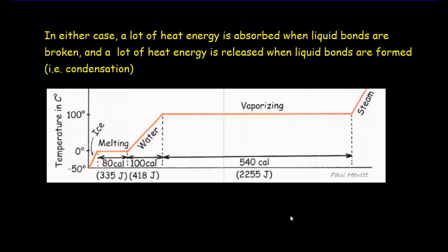So in either case, we have a lot of heat energy that's going to be absorbed when liquid bonds are broken. This is a fairly big number. That's the latent heat of water, 540 calories per gram. That energy's got to come from somewhere. We're going to absorb, either when we're evaporating or boiling, we've got to absorb 540 calories per gram to go from the liquid state to the gas state.